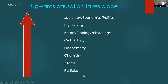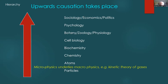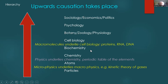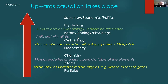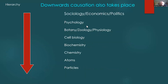There is upward causation: microphysics underlies macrophysics, as in the kinetic theory of gases. Physics underlies chemistry via the periodic table and quantum chemistry. Molecules underlie cell biology — proteins, RNA, DNA — the great discoveries of molecular biology last century. Cells underlie all of life, and physics and molecular/cellular biology underlie neuroscience. But downward causation also takes place.